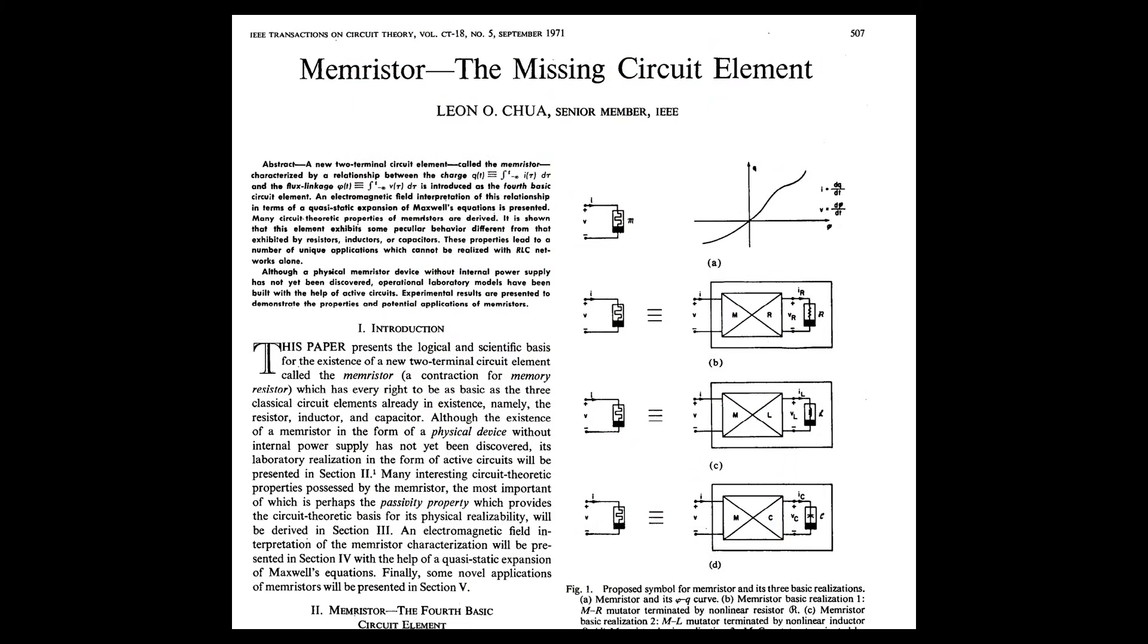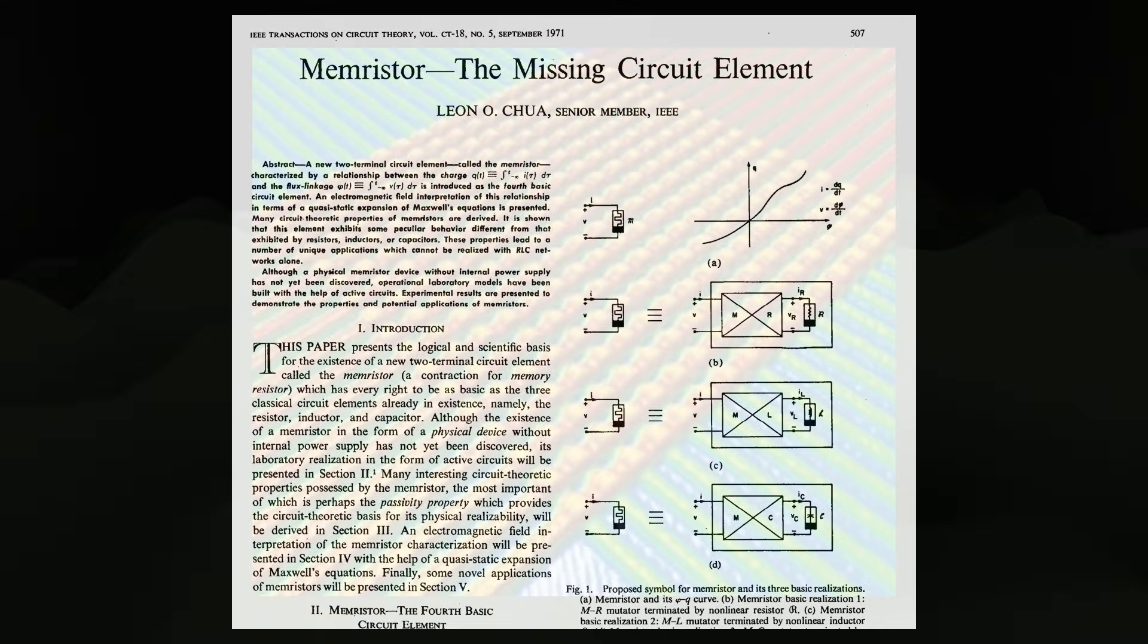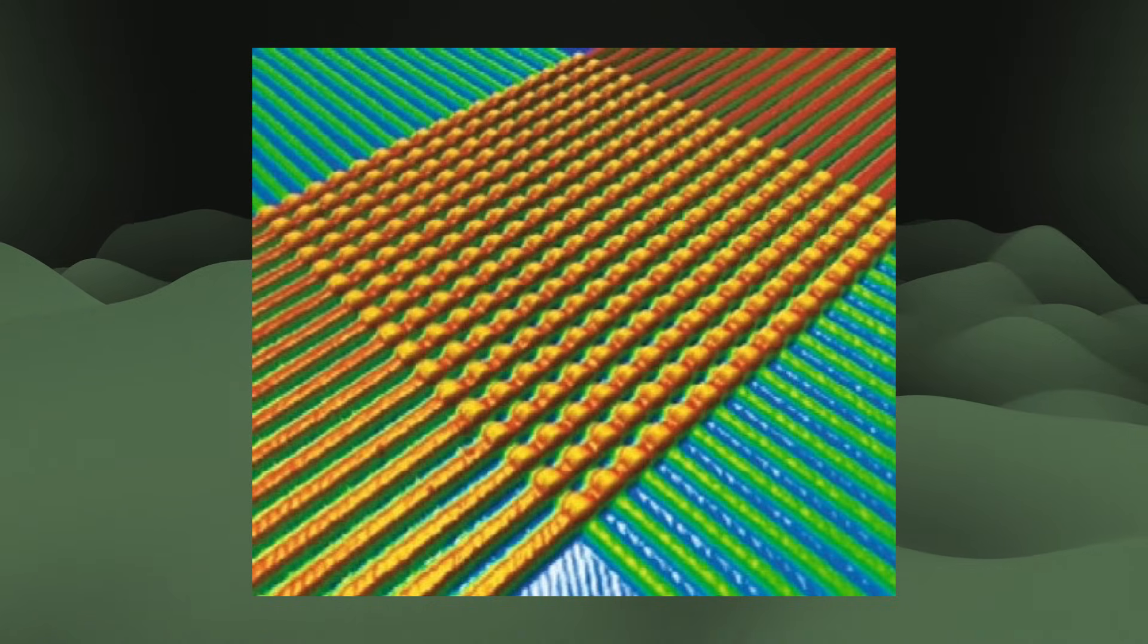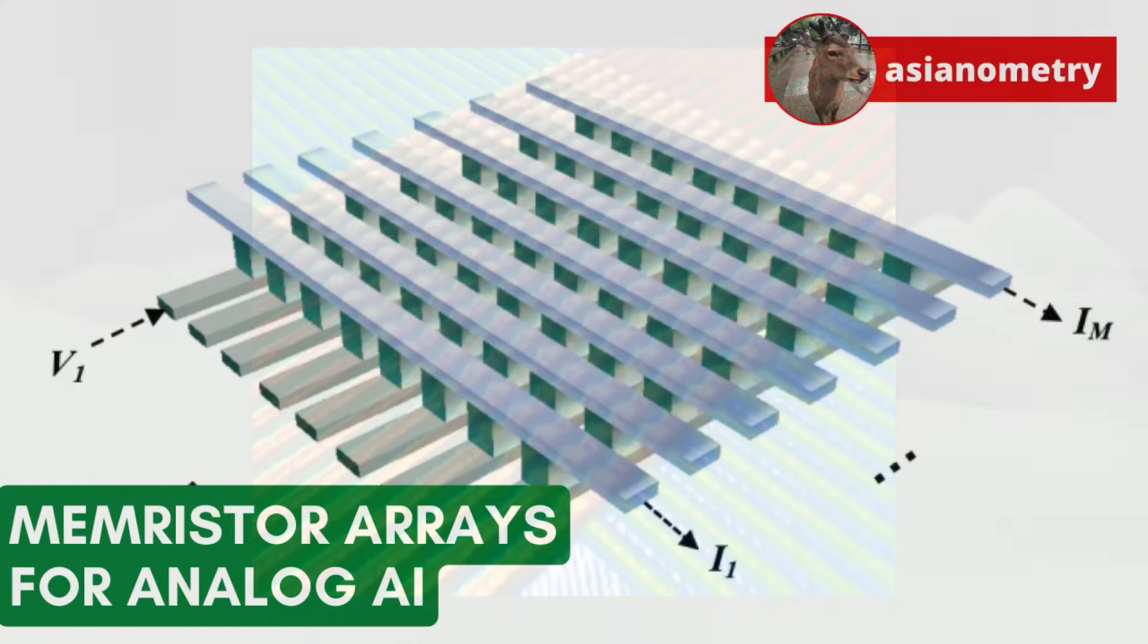Over 30 years later, with the AI revolution in full swing, scientists are exploring how to use these memristors and their unique conductive properties in analog AI accelerators. In this video, an introduction into the strange and controversial circuits as well as their potential in the world of AI.